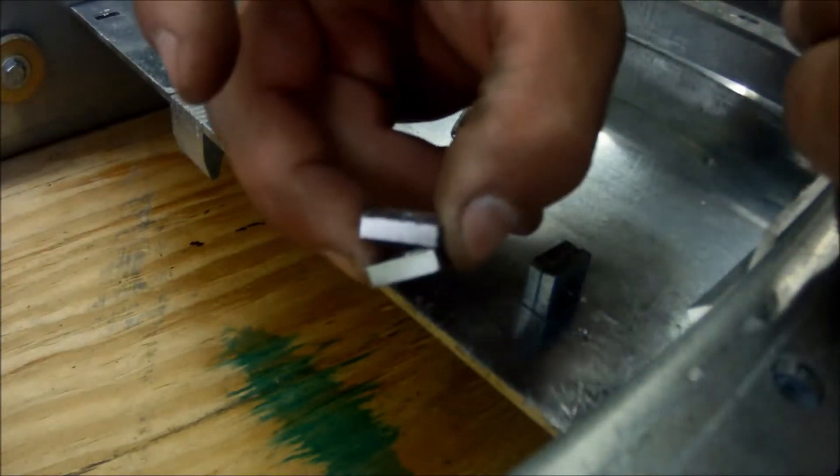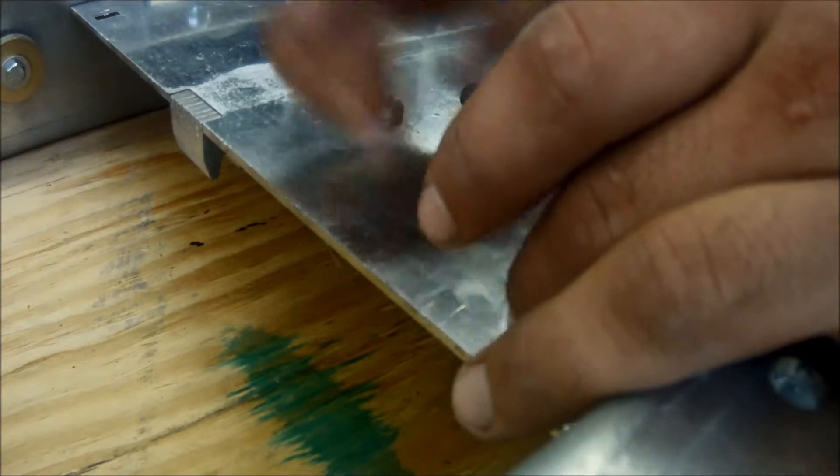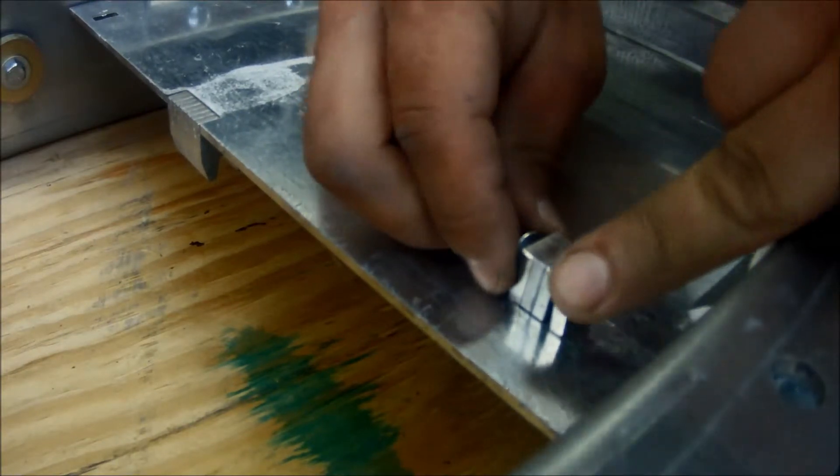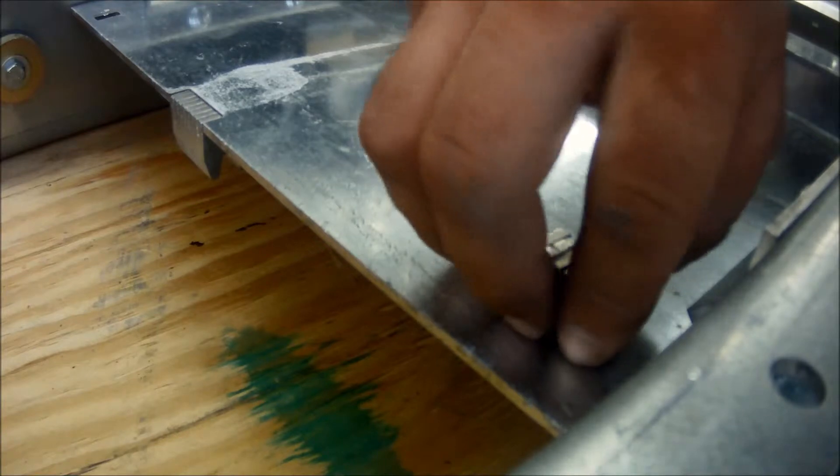You will then take the two outer shims and place one on either side of the trip brackets. Lastly, place your carriage bolt through all of the brackets. Install the nut and tighten.